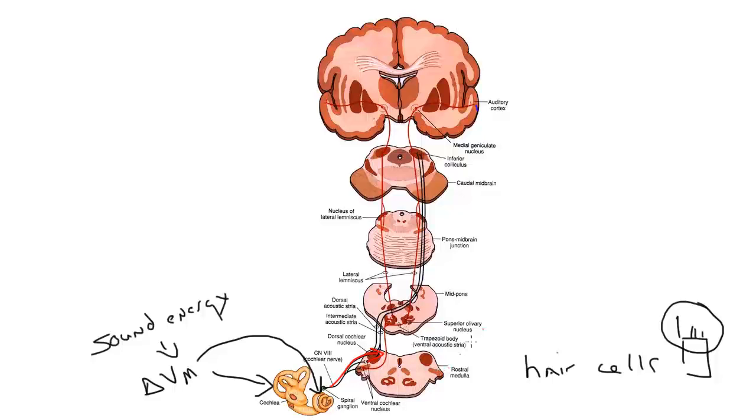That is the key to ganglion cell function, gathering information and carrying it into the central nervous system. Well, that's what happens in all of that information, synapses, in the cochlear nuclei. They're sitting right here.